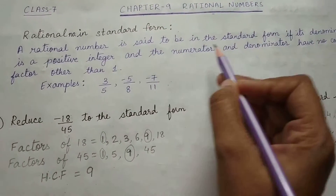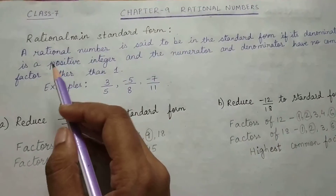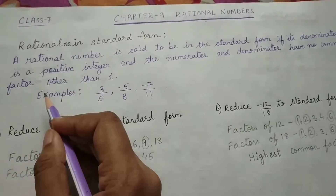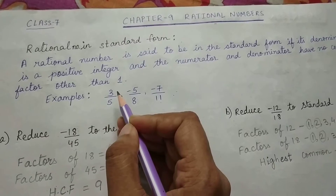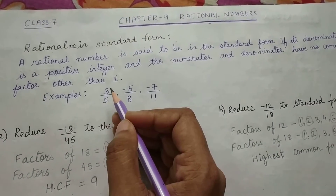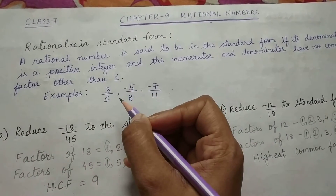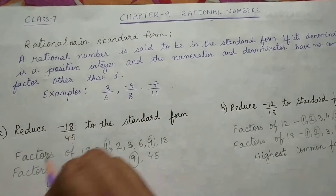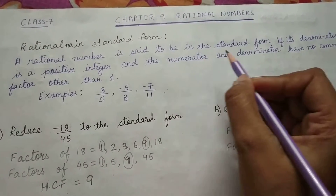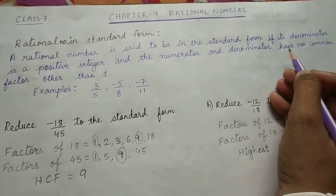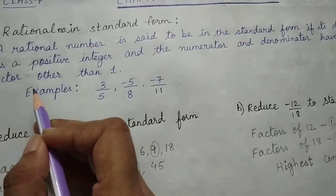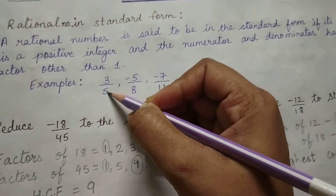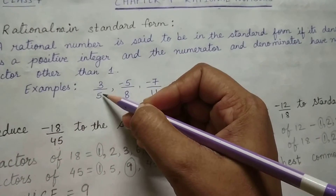A rational number is said to be in the standard form if its denominator is a positive integer and the numerator and denominator have no common factor other than 1. The first criteria is its denominator should be a positive integer. The second criteria is that the numerator and denominator have no common factor other than 1.